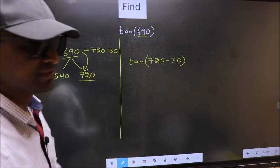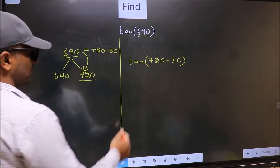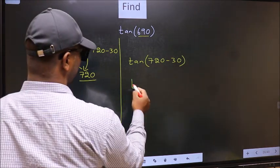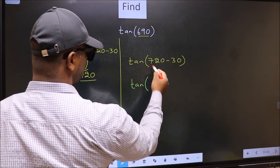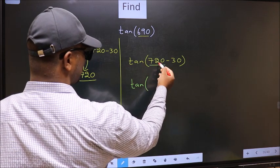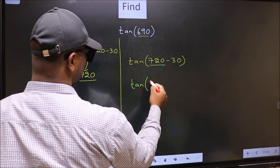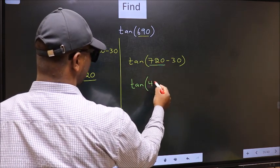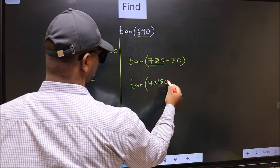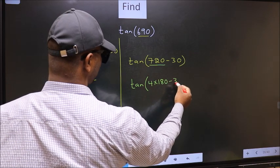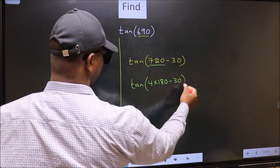Next, tan — in place of 720, we should write 4 into 180. So this becomes tan(4 × 180 minus 30).